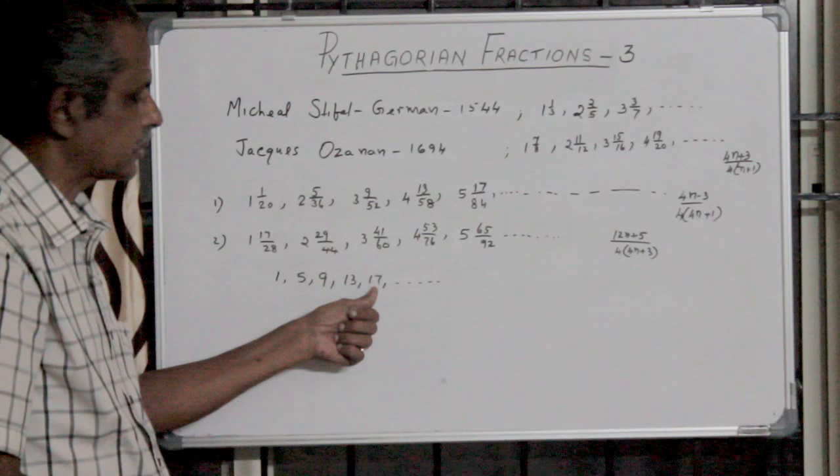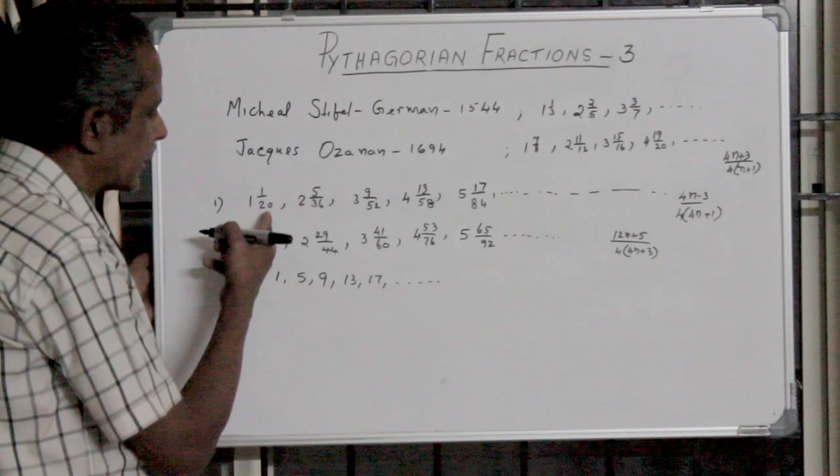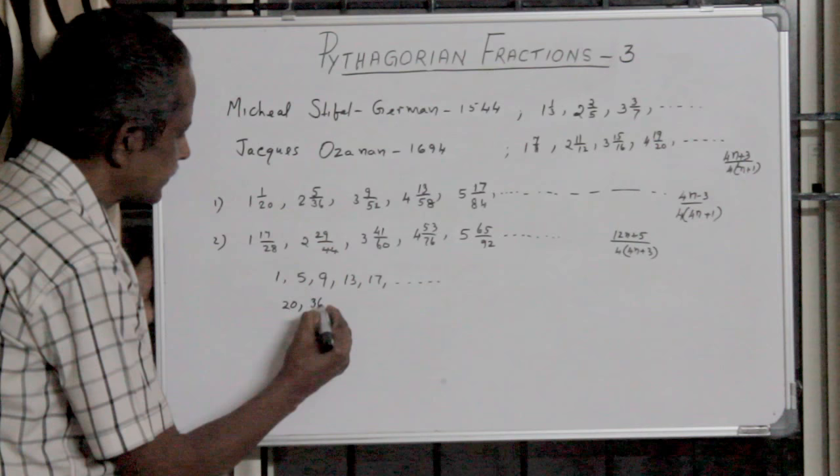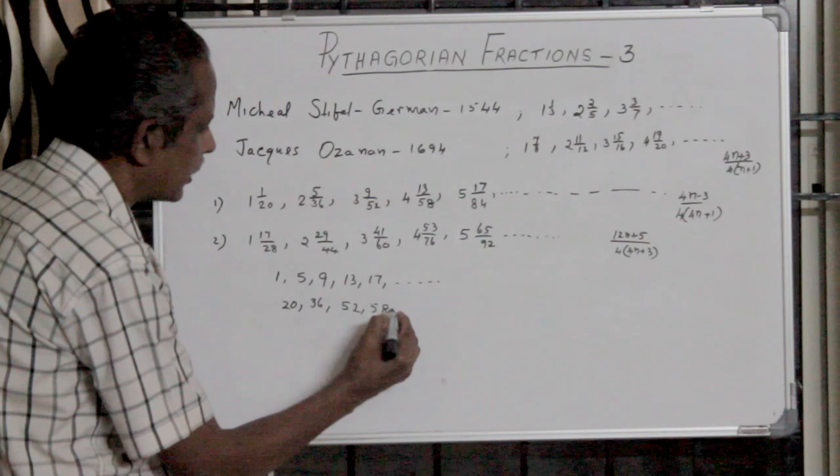Although the denominator, if you take the denominator only, there is 16 as the difference: 20, 36, 52, 68.